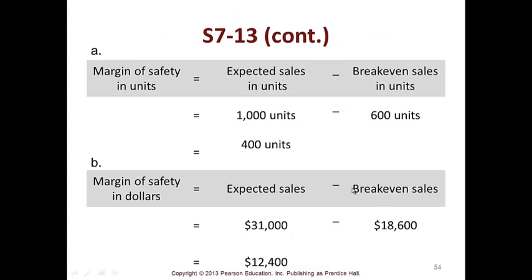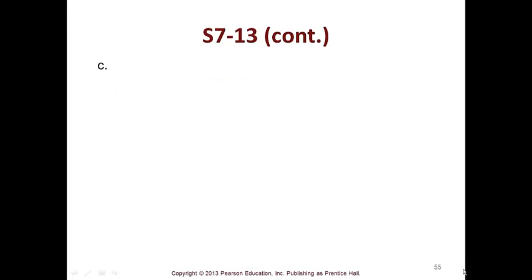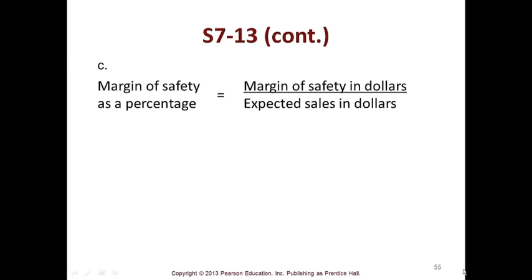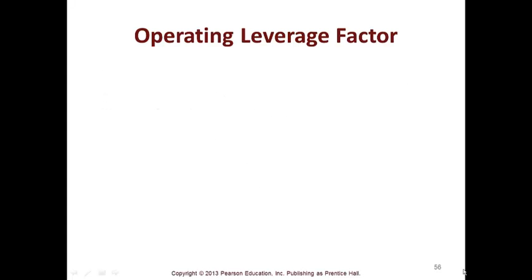Do S7-13 to check it out on your own. Here's your cushion: 400 units, $12,400 in dollars, and 40% as a percentage.